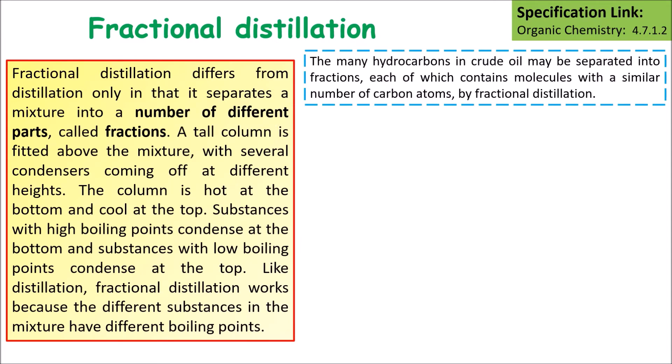Fractional distillation differs from simple distillation in that it separates the mixture into a number of different parts called fractions. A tall column is fitted above the mixture with several condensers coming off it at different heights. The column is hot at the bottom and cool at the top.